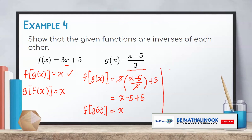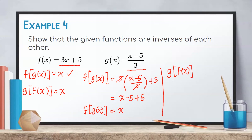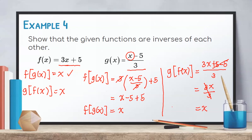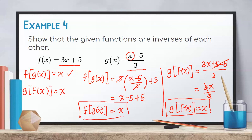On the other hand, for g of f of x, we substitute the entire f of x into the x of g of x, giving us 3x plus 5 minus 5 all over 3. Simplifying the numerator, positive 5 minus 5 is 0, so we have 3x divided by 3. And 3 divided by 3 equals 1, so we have x. Therefore, g of f of x equals x. With both conditions satisfied, f of x and g of x are inverses of each other.